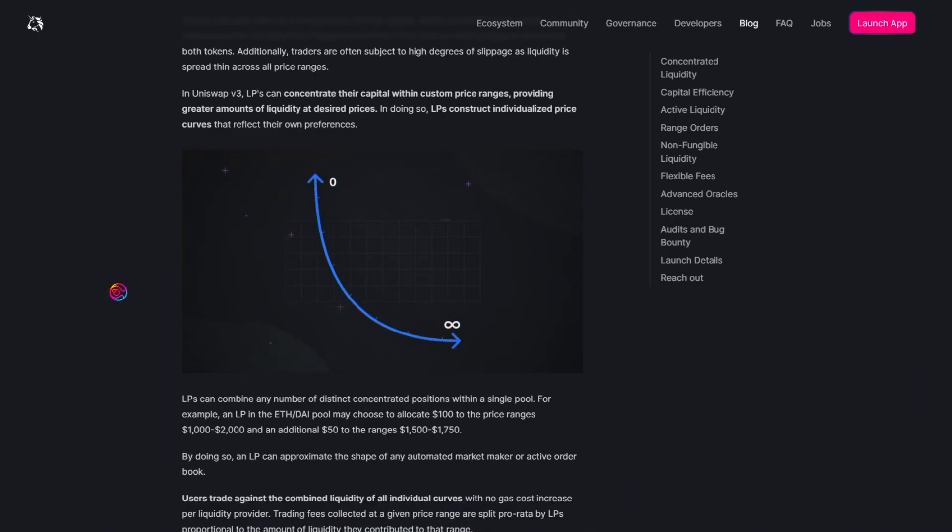This introduces an active management component of Uniswap V3 liquidity whereby liquidity providers must constantly adjust their price ranges to meet active price ranges in order to continue earning trading fees.